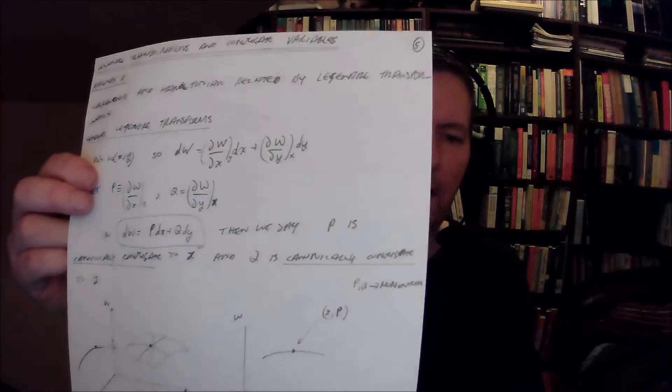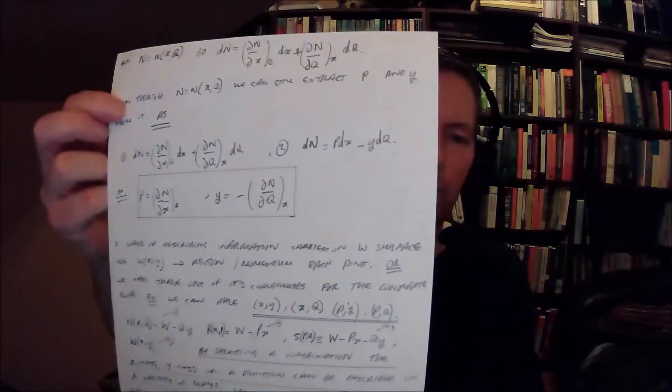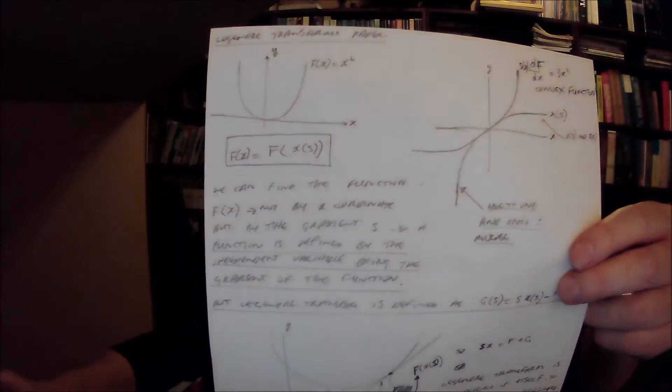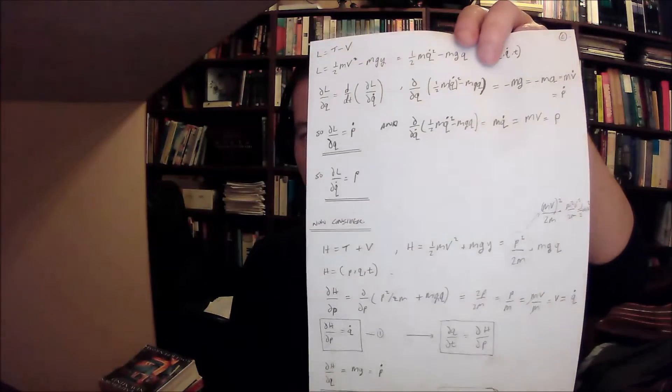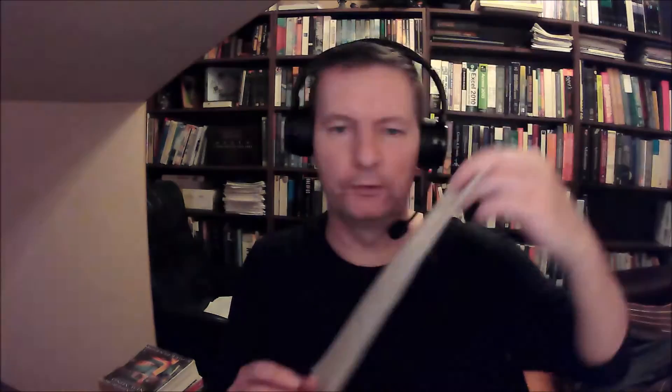I've also worked out all the mathematics that I require for the Legendre transform, extended to a function of two variables — so the Legendre transform as a function of two variables as opposed to one. I've worked through all of the mathematics I really need for the Legendre transform and how it's used to convert from the Lagrangian method to the Hamiltonian method.